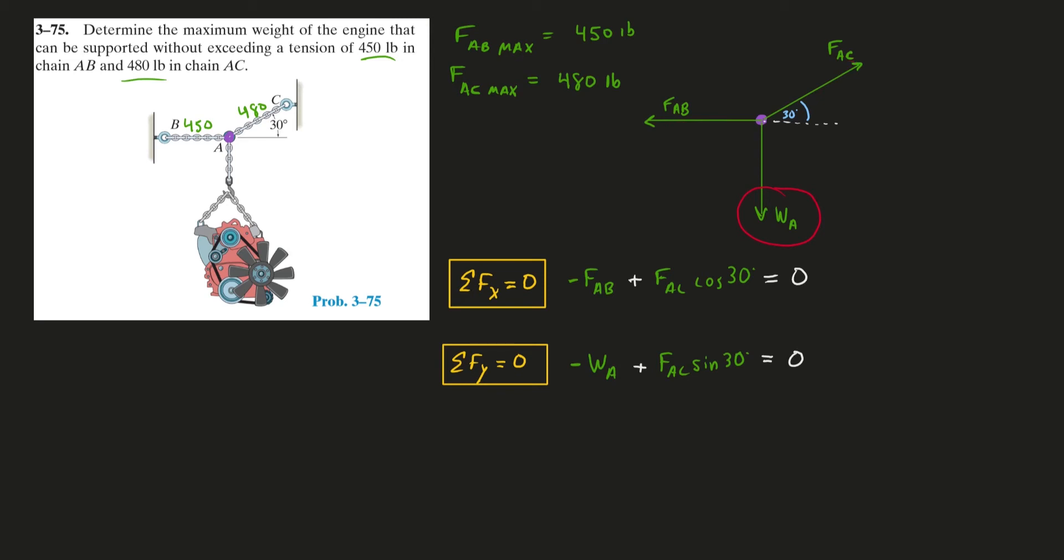We want to be getting the most work we can out of these two chains. So ideally, we would like force AC to be operating at its max, 480, and force AB to be operating at its max, 450. That's probably how we can get the most weight in here. Sadly, you're never able to maximize both of them. So what we're going to do is we're going to make an assumption.